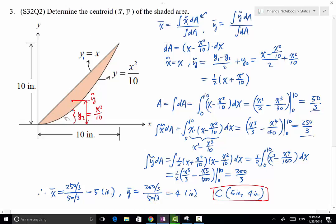And let's mark it on the graph to see if it makes sense. So from here to here is 10 inches. x-bar is at 5 inches, so midpoint. From here to here is 10 inches, y-bar equals 4, so about here. And that looks reasonable. So that is the centroid x-bar, y-bar of this shaded area.